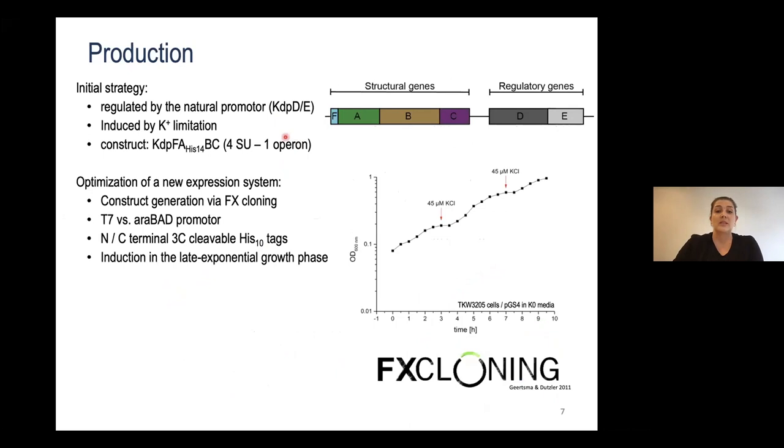When I began this, there was an expression system for KDPF-ABC that was based on the natural promoter, the KDPD/KDPE two-component system. This system is actually induced by potassium limitation, a state that E. coli cells had to be adapted to over several days. And then in the final culture, which was done in media that literally didn't contain any potassium, this state had to be closely monitored and adapted by additions of small amounts of potassium that were just enough to allow the protein to function, but not too much to stop protein production. As you can see, this is very tedious.